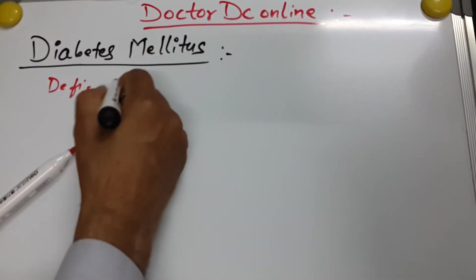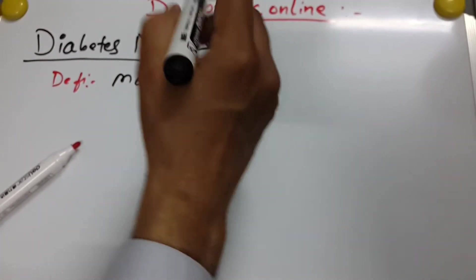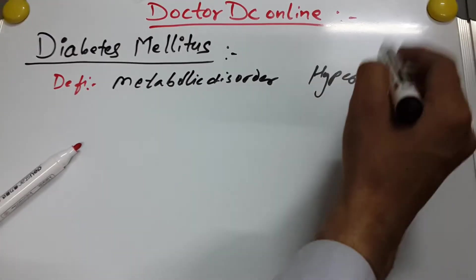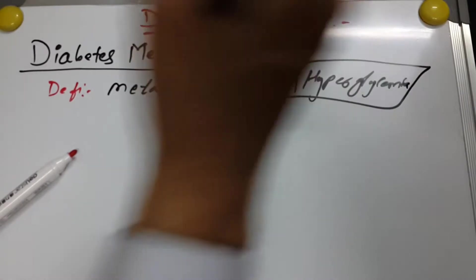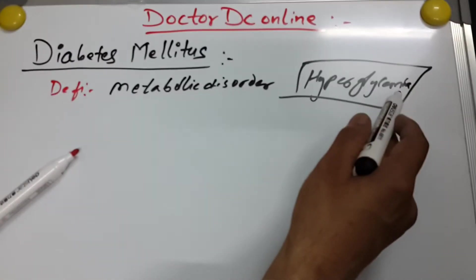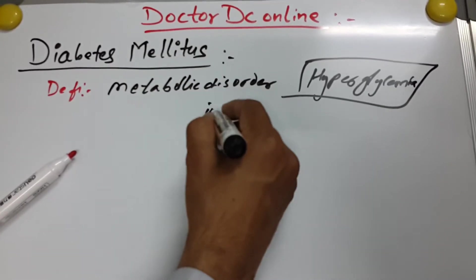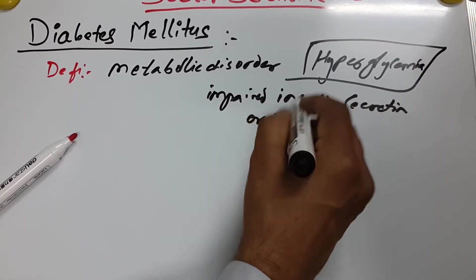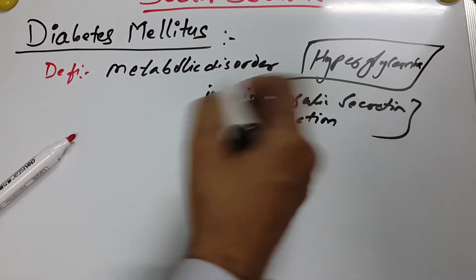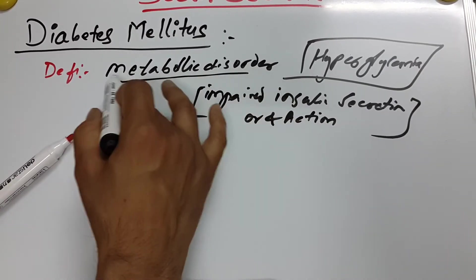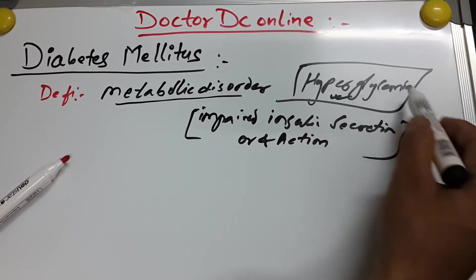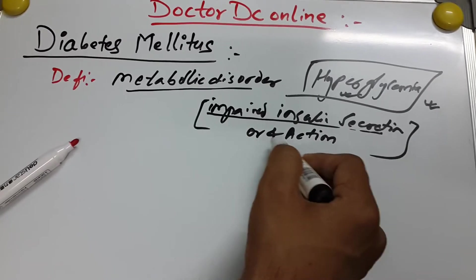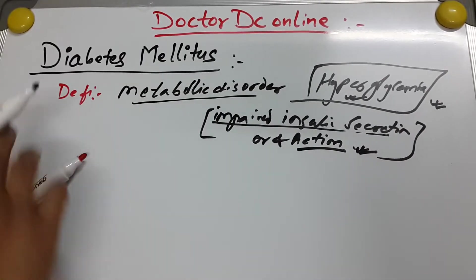The definition is simple: diabetes mellitus is a metabolic disorder characterized by hyperglycemia, resulting from impaired insulin secretion and/or actions of insulin. This means the glucose level is high due to problems with insulin secretion or insulin action.